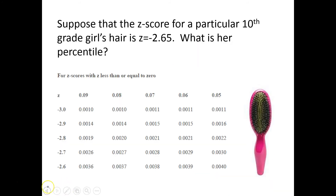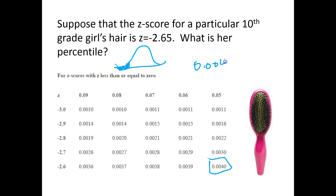Suppose the z-score for a particular 10th grade girl's hair is negative 2.65. They already did half the work — they found the z-score for us. Since it's negative, we're on the left side of the curve. To find the percentile, look up negative 2.65 on the negative z-table: here's negative 2.6, then scroll to 0.05. Looks like 0.004 — about 4 tenths of 1 percent. Very small.